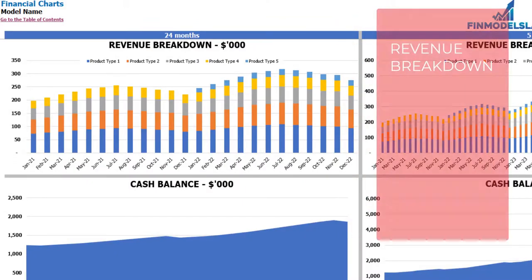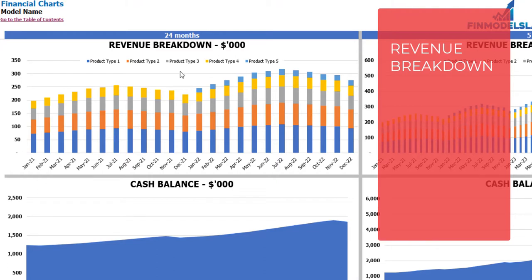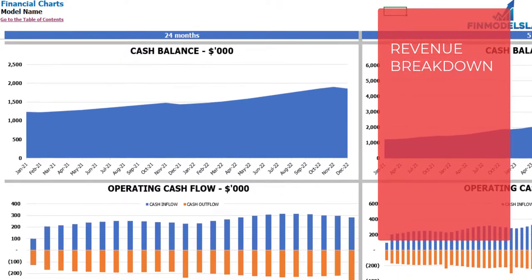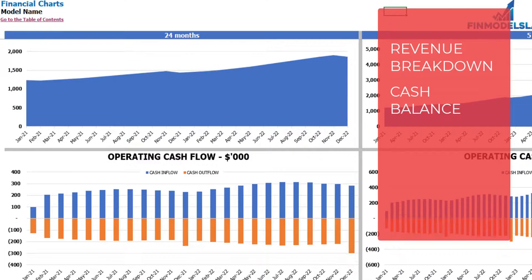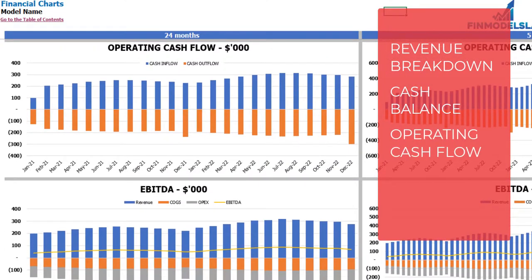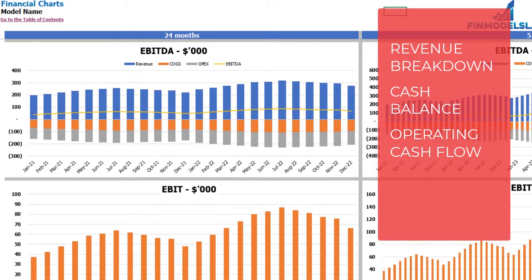On the financial charts tab you may see the main financial outputs in graphical form. On the left side you see charts for 24 months and on the right side for five years or 60 months. The top charts show revenue breakdown by product types. The next charts show cash balances for two and five years. Below that are operating cash flow charts broken down by cash inflow and outflow. Then the EBITDA breakdown showing revenue, COGS, and OPEX, with the resulting EBITDA value as a yellow line by month. Finally, the last charts show EBIT value by month.